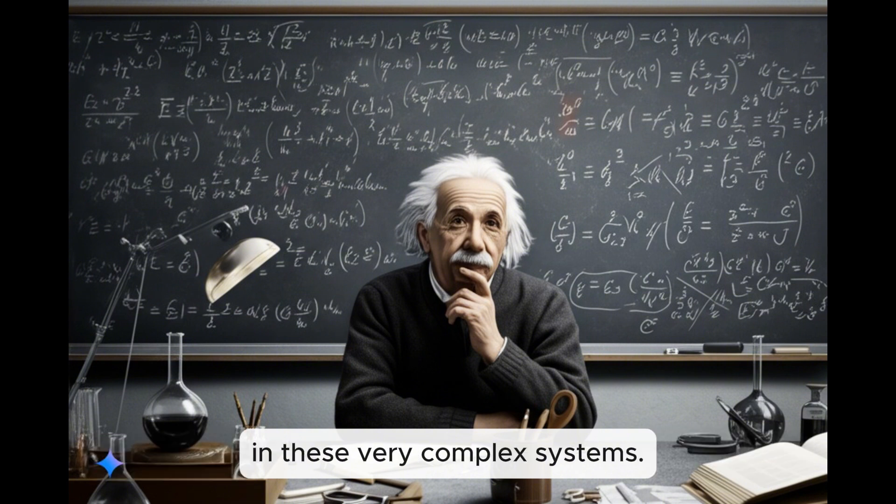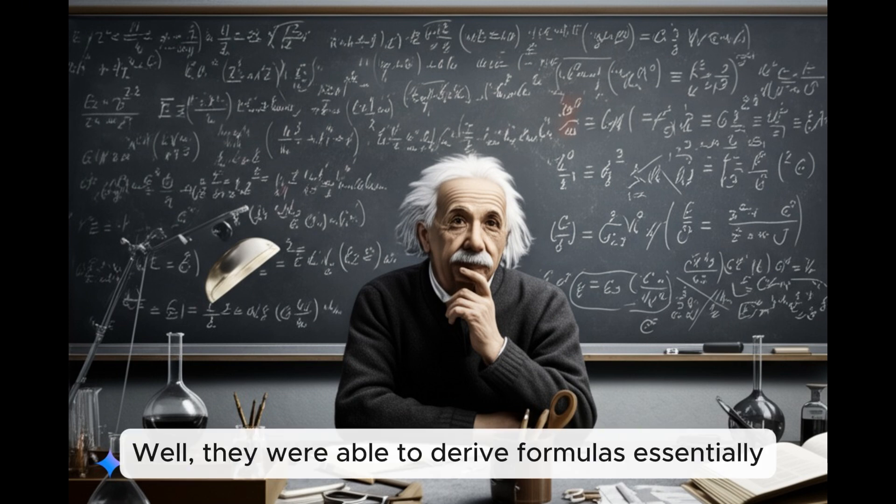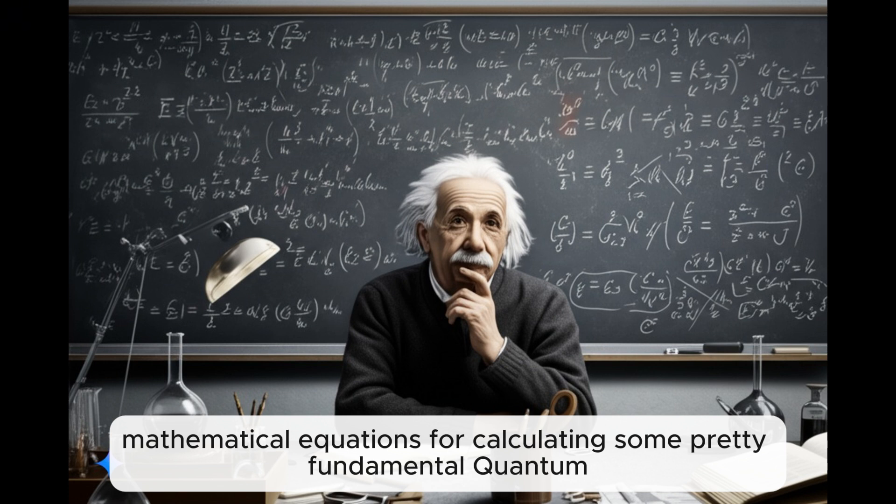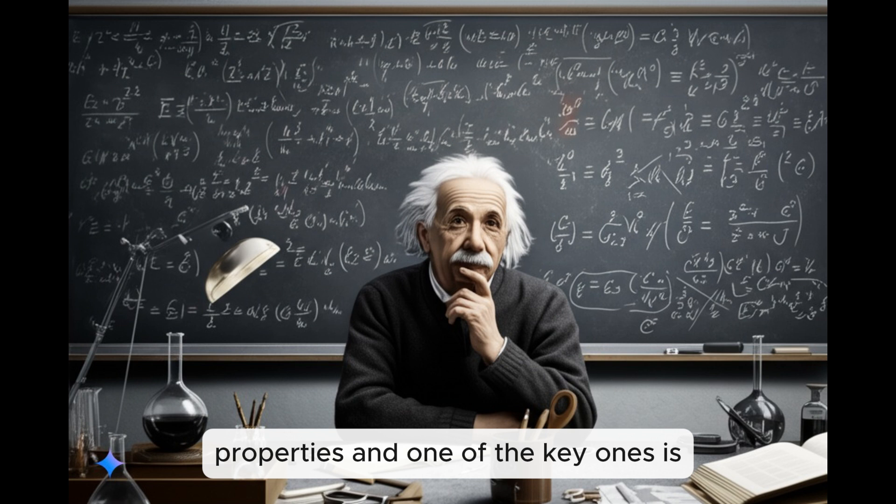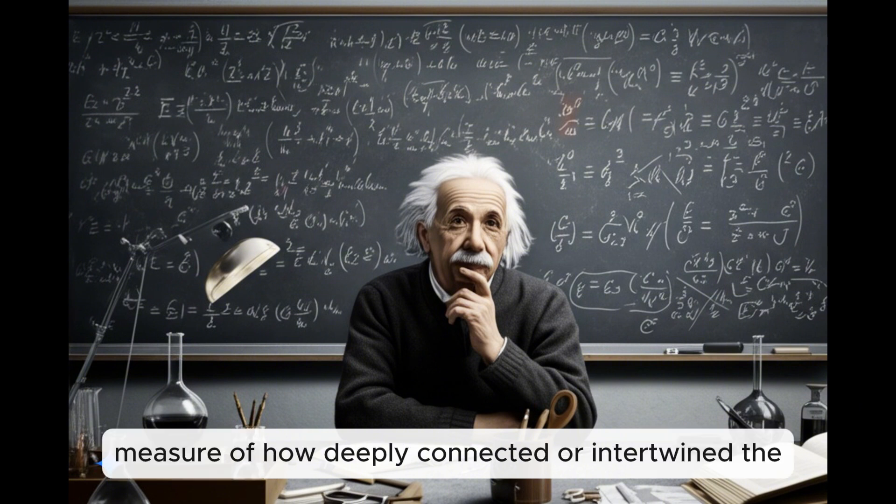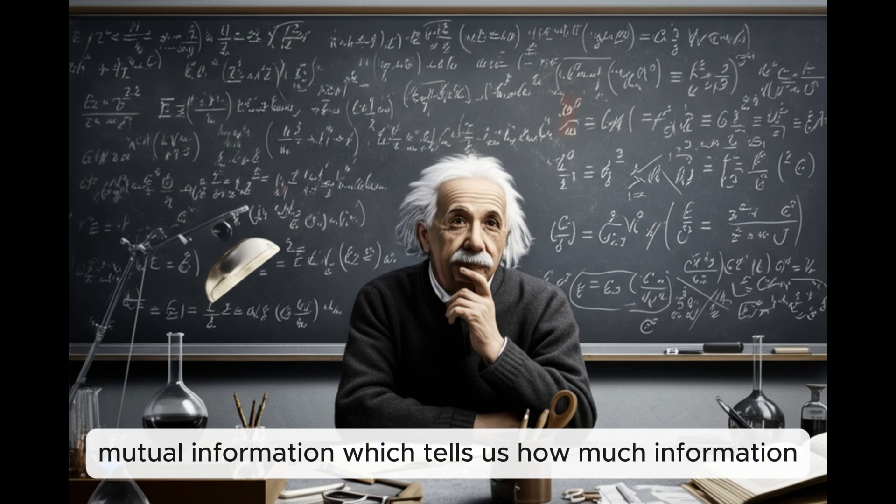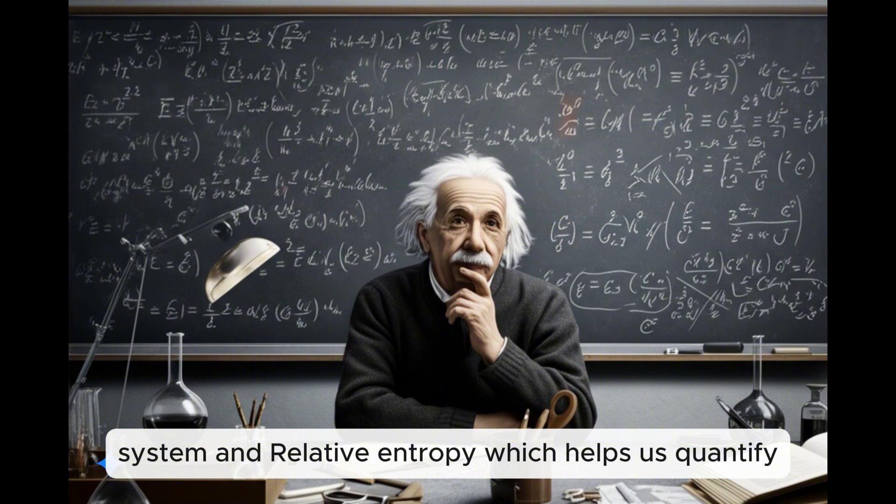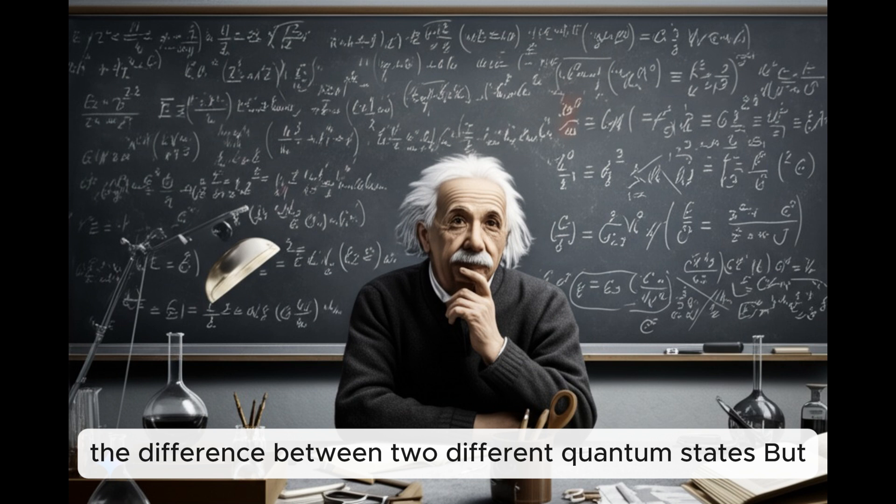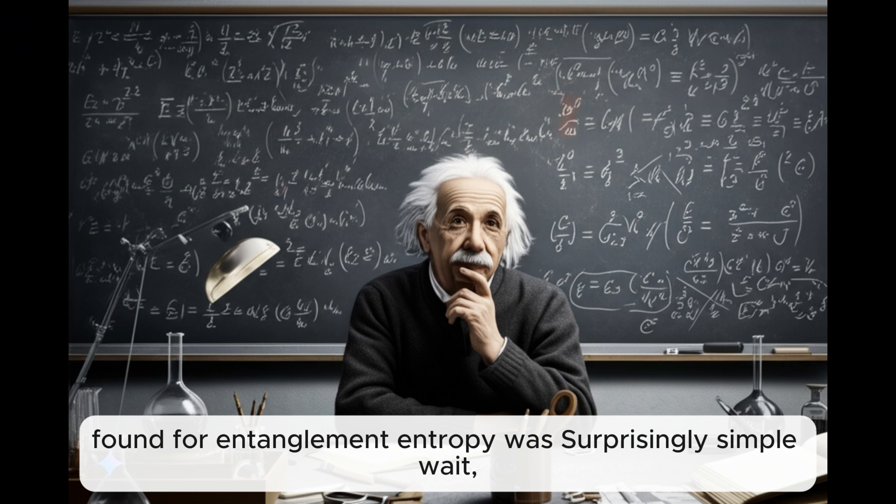But because these interactions are so strong, the quantum states, the way these electrons are arranged and behaving, gets incredibly complex. It's like trying to understand the choreography of a dance where everyone's constantly bumping into and influencing each other. So they focused on this local entanglement in these very complex systems. What did they actually find? Well, they were able to derive formulas, essentially mathematical equations, for calculating some pretty fundamental quantum properties. And one of the key ones is what we call entanglement entropy.